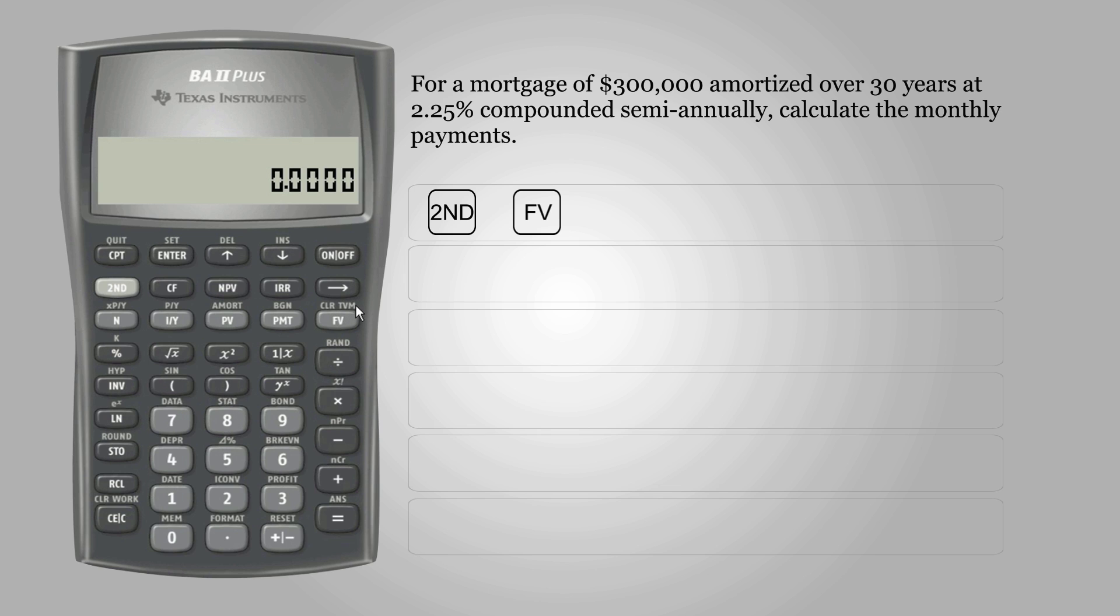Then we need to set the number of compounding periods per year, CY, and number of payments per year, PY. So press 2nd, IY, and set the PY to 12, since the question asks for monthly payments, and enter.